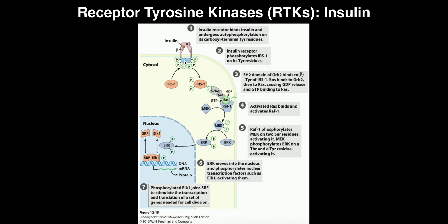On the cytoplasmic domains of each receptor unit — the left and the right — there is a tyrosine kinase. The right tyrosine kinase will phosphorylate tyrosines on the left unit, and the left one's tyrosine kinase activity will phosphorylate tyrosines on the right unit. That process is called autophosphorylation. When enough tyrosine residues on each receptor unit are phosphorylated, the receptor is fully active.